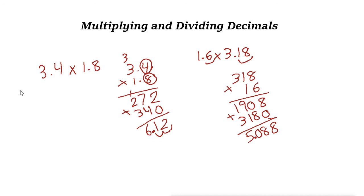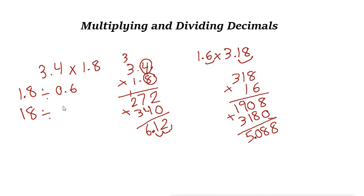Now let's divide two decimals. Say we have 1.8 divided by 0.6. The easiest way is to multiply both by the same number. Multiplying by 10 moves the decimal point to the right: 1.8 times 10 is 18, and 0.6 times 10 is 6. So 18 divided by 6 equals 3 — the answer is 3. Dividing 18 by 6 is the same as dividing 1.8 by 0.6.